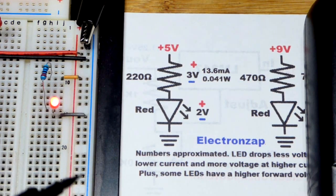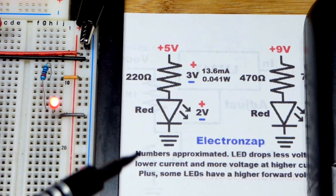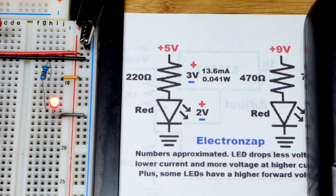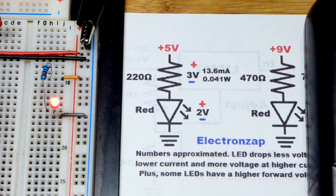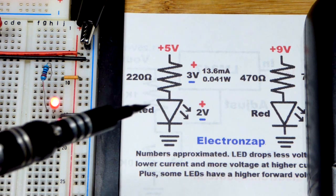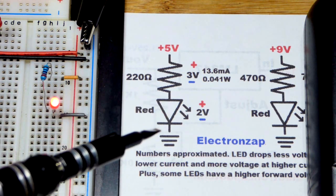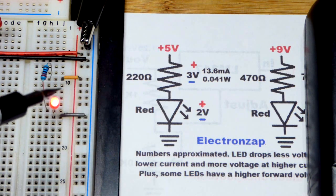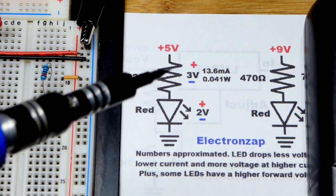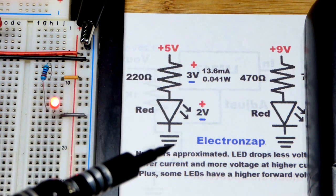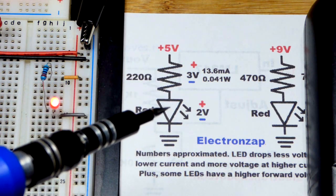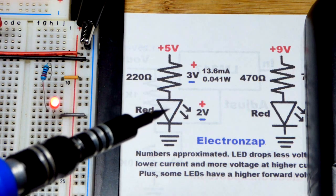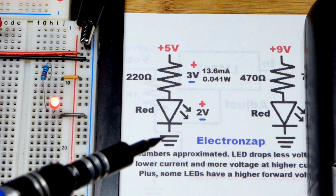This is going to be the first in a series of videos where we're going to look at the voltages across components. It's very important to understand this when you are learning electronics and especially when you're designing your own circuits. To begin with, we're going to look at an LED protected by a resistor. The LED needs current limited to 20 milliamps of current or less, so you use a protective resistor.